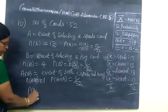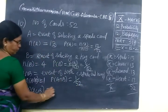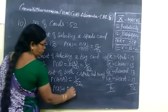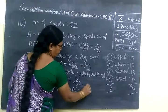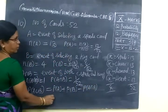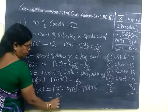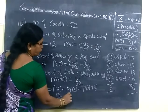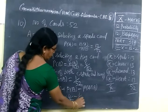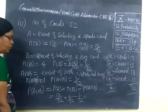By addition formula, P of A union B equal to P of A plus P of B minus P of A intersection B. So P of A 13 by 52, then 4 by 52, minus 1 by 52.